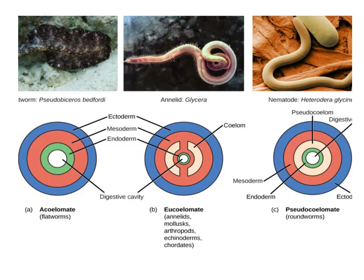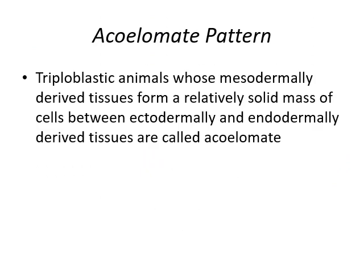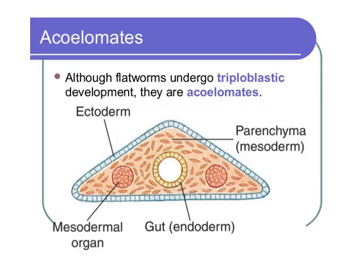Acoelomates include flatworms. Pseudocoelomates include nematodes and roundworms. Coelomates include annelids and mollusks. Acoelomates are triploblastic organisms with no body cavity — there is a solid mass of cells between ectoderm and endoderm. In the diagram, the blue outer layer is ectoderm, the inner red is mesoderm, and the inner yellow is endoderm.